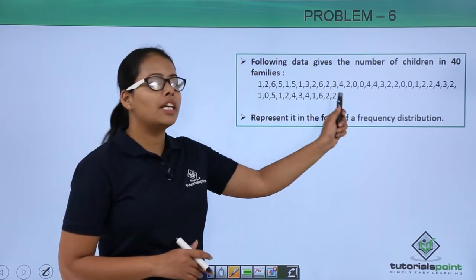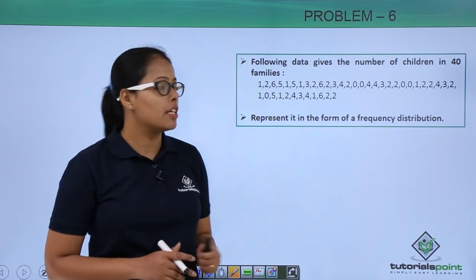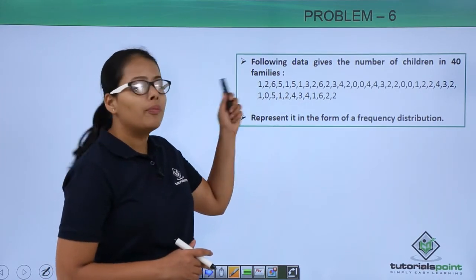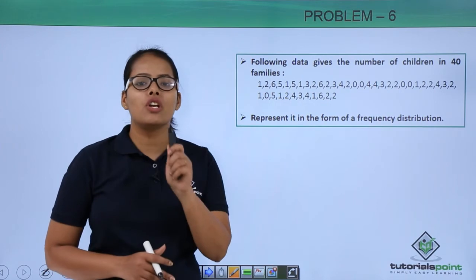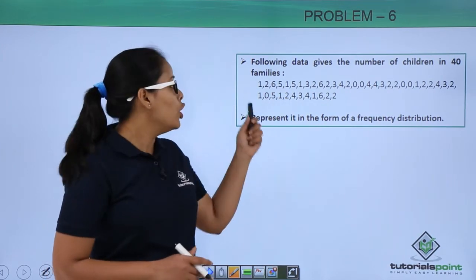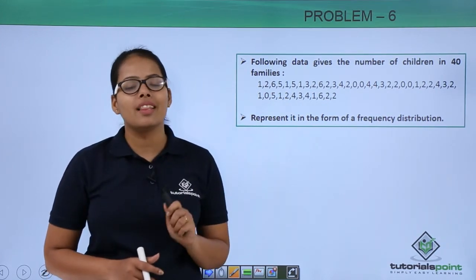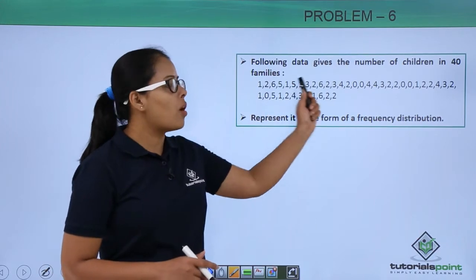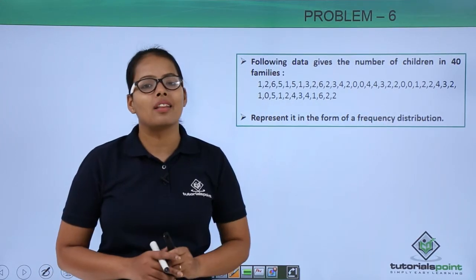So here, this is the data for the 40 families where one represents the number of children in the first family, two represents the number of children in the second family, and that's how it will go on for all the other observations.